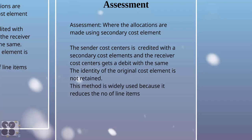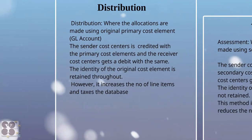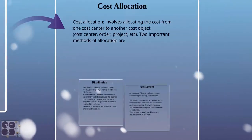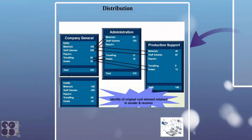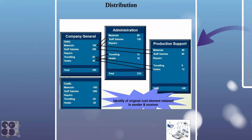Now let's take a look at an example of distribution. In this example there is a posting on the left side: materials 100, staff salary 200, repairs, travelling, hotel — total cost is 350. You see the postings in financial accounting; this is the primary posting. On the credit side you see the same: 100, 200, 20, and 30.